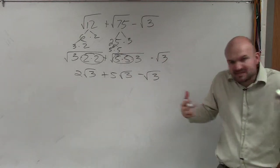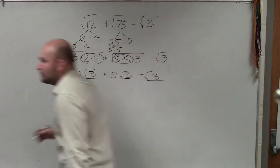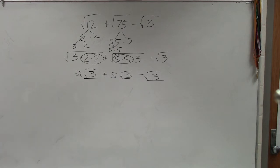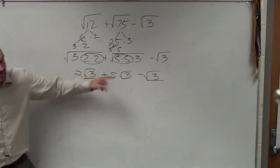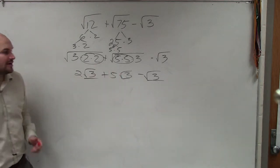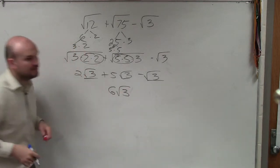Now, the whole purpose of simplifying them is now I have the square root of 3 for each and every one of those terms. So now I can subtract. 2 plus 5 is 7 minus 1 is 6. 6 square root of 3.